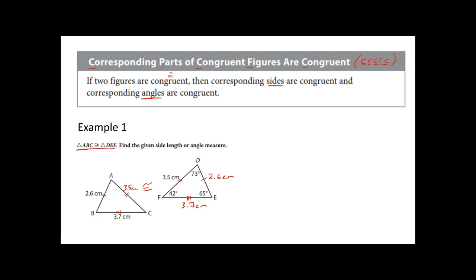Now, as for angles, angle A is corresponding to angle D. So if angle D is 73 degrees, so will A, angle A. Now, if you notice, the one that's corresponding here with angle F, which is 42 degrees, is going to be angle C. So angle C will also be 42 degrees.